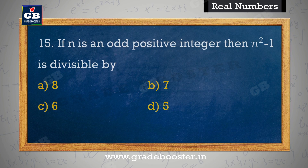If n is an odd positive integer, then n² minus 1 is divisible by. Yadi n ek odd positive integer hai, to n² minus 1 isse divisible hai. A. 8, B. 7, C. 6, D. 5.